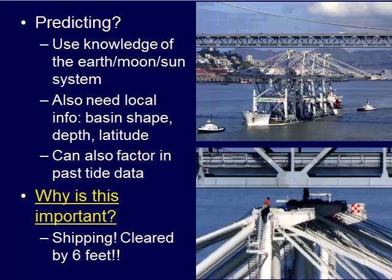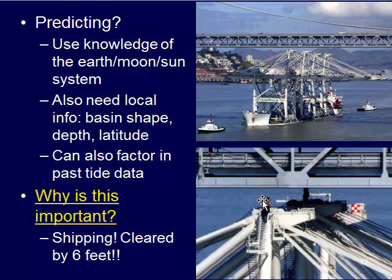We can also factor in past tide data — looking at patterns recorded by tide gauges and comparing that to what we're actually predicting. In areas like San Francisco Bay, which has a significant tidal range and a busy shipping port, this is critical. If you click the 'why is it important' link, you'll find a story about a barge carrying equipment that had to pass through at the lowest low tide. They knew exactly how high the boat was, how high it would be floating in the water, and they cleared the bridge by only six feet.